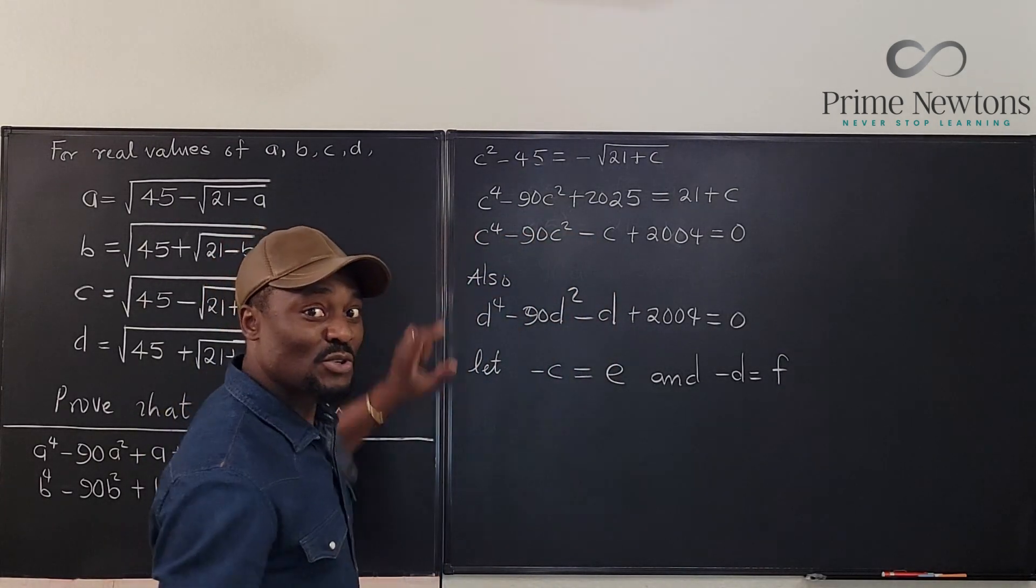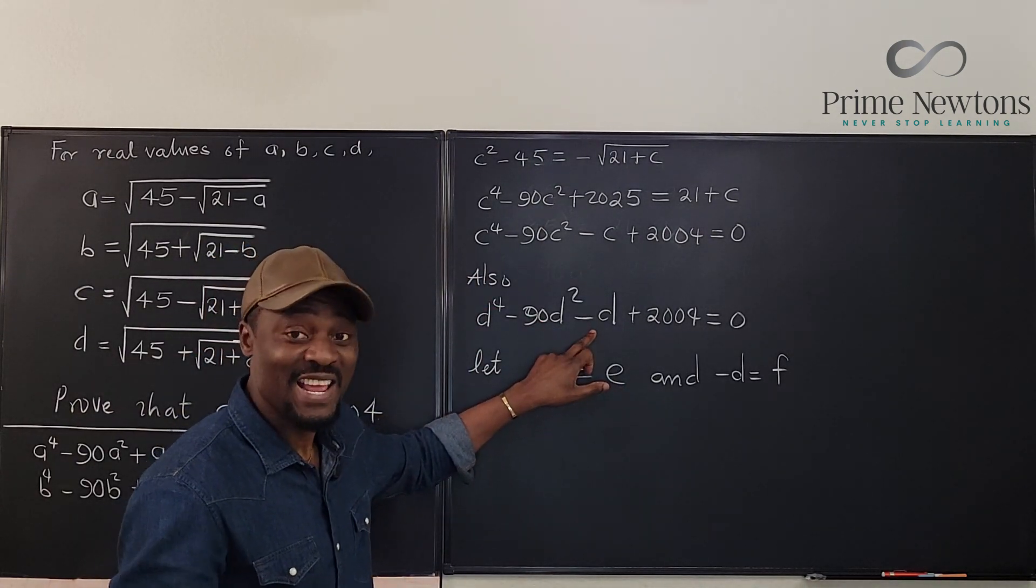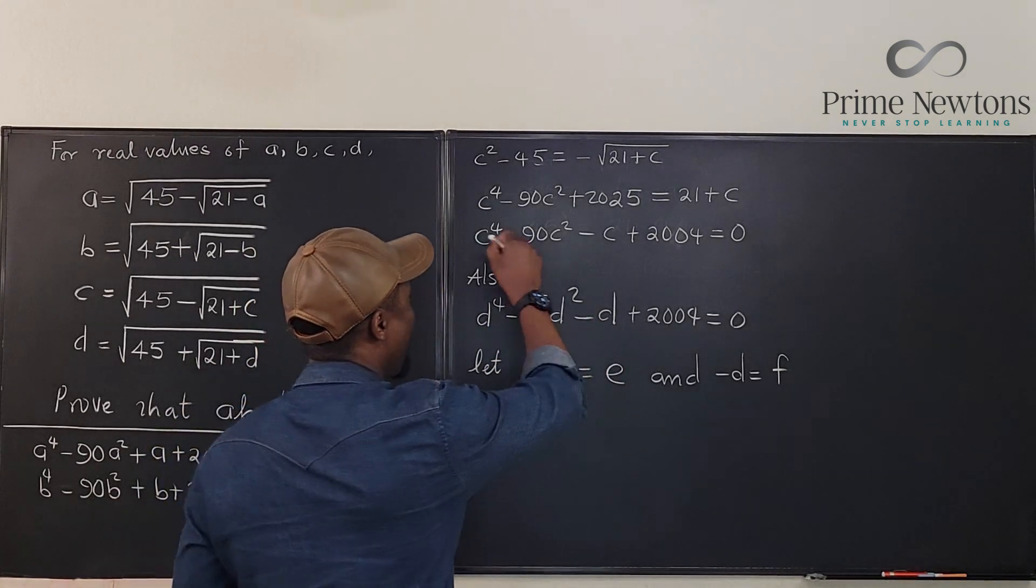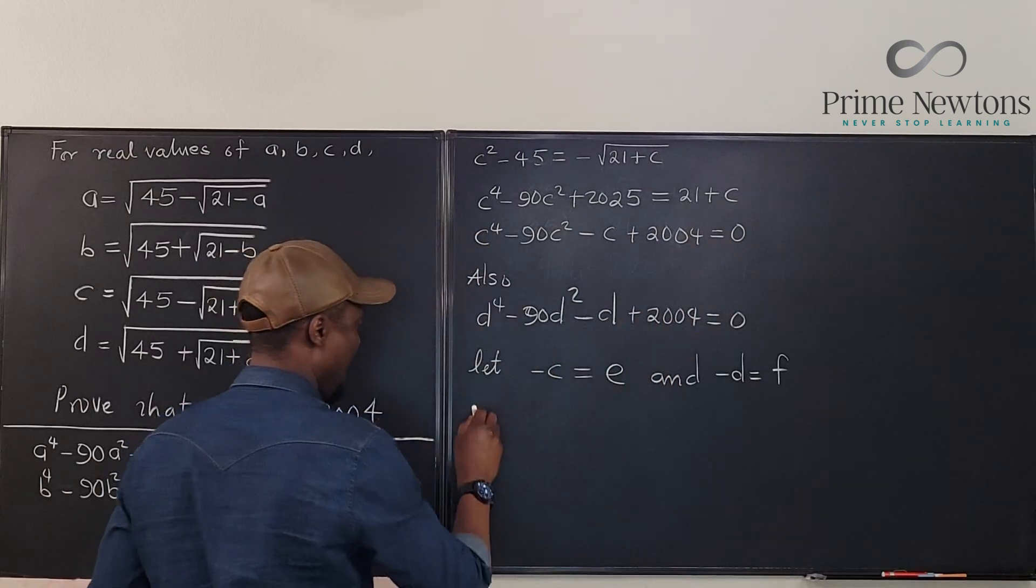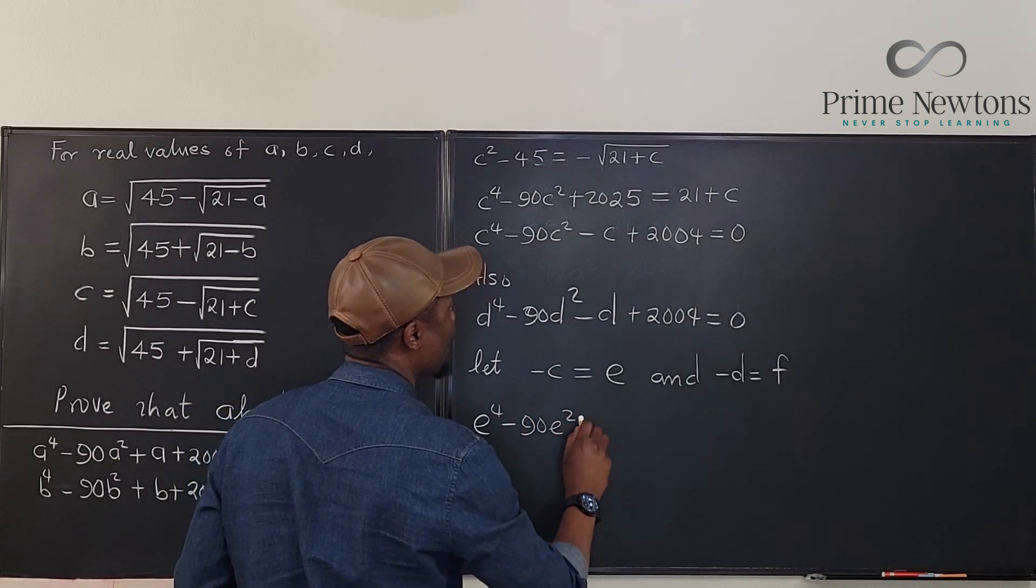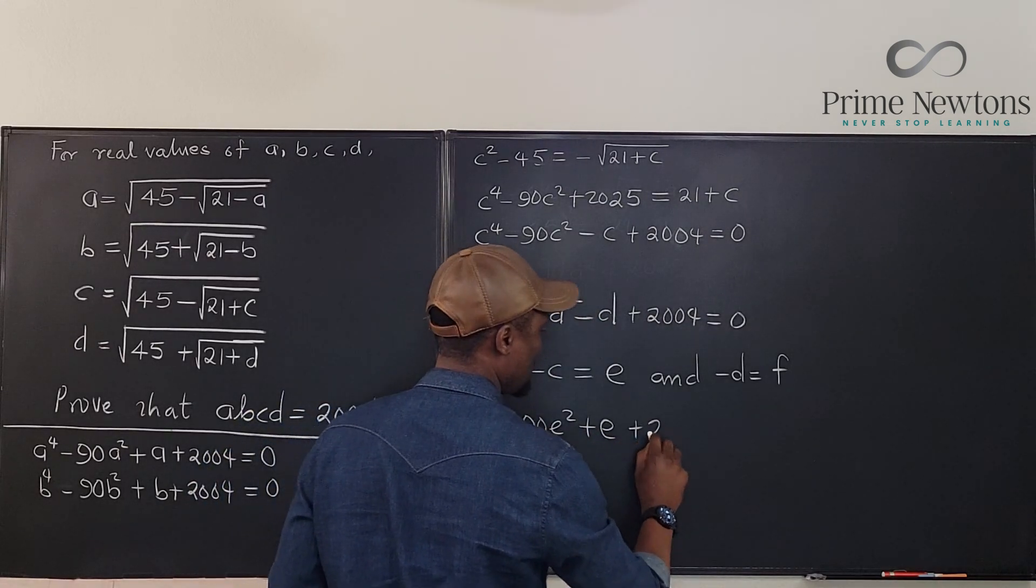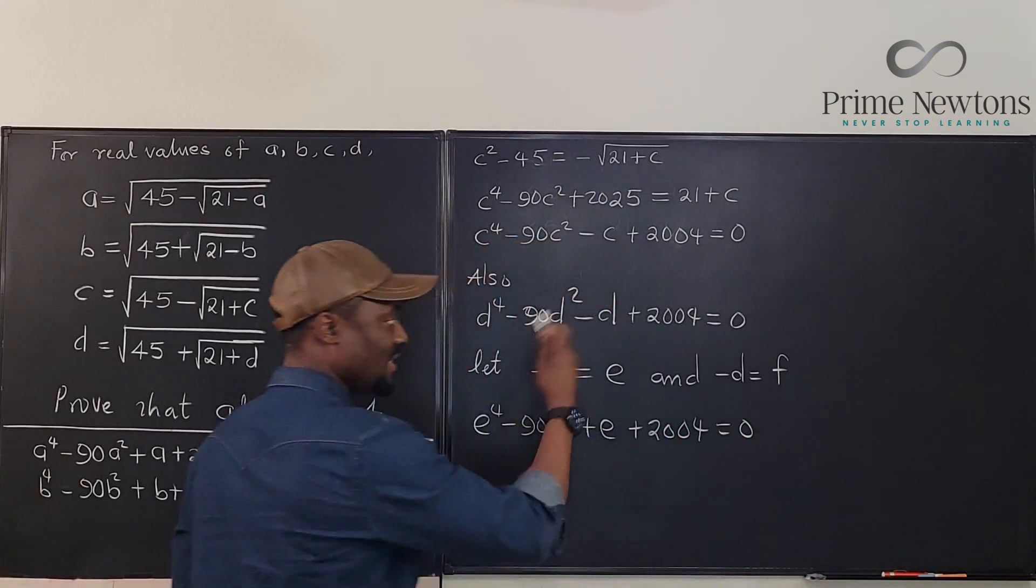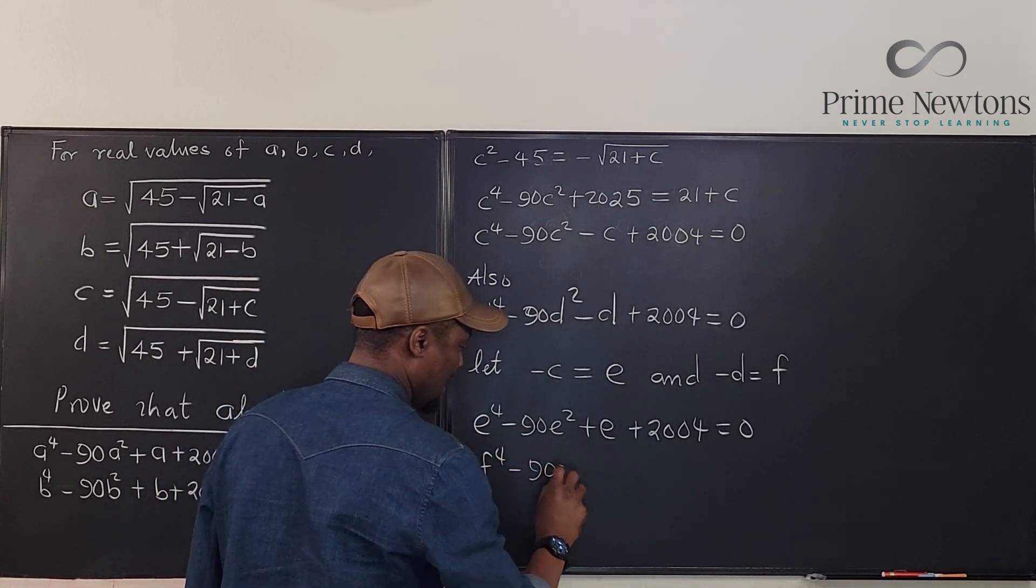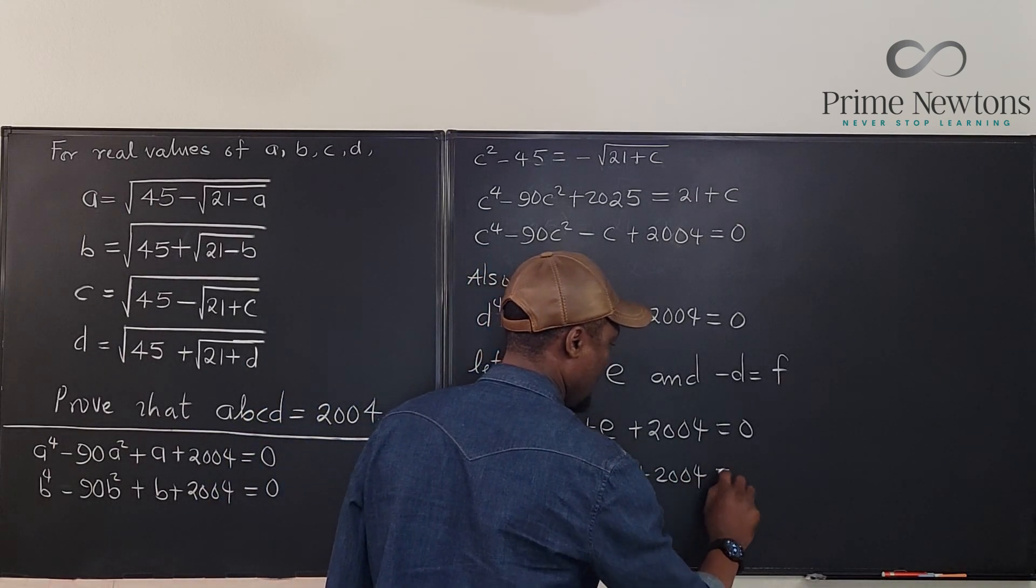It means we can rewrite this expression. Remember whether it's positive or negative, the squares or the fourth powers will not be affected. This is the only thing that's going to, that the sign will be important too, because all these two will be positive. Okay? So we can actually rewrite this expression and say that we have E to the fourth minus 90 E squared plus, now it's going to be plus E instead of minus C, plus E plus 2004 equals zero. And the same thing happens in the case of F. So we can say that F to the fourth minus 90 F squared plus F plus 2004 is equal to zero.